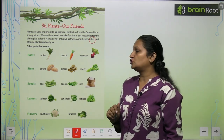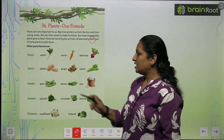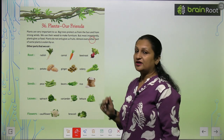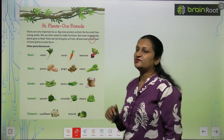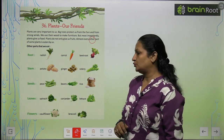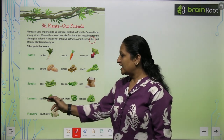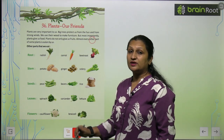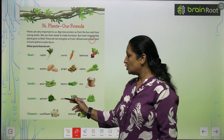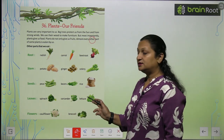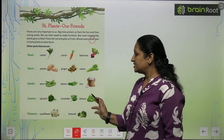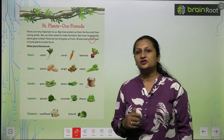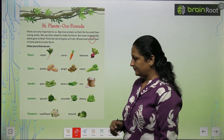We also consume stems. Then we have seeds — peas, beans, and rice are all seeds which we consume. Then we have leaves. Leaves like spinach, coriander, and lettuce — these are all leaves that we can eat.